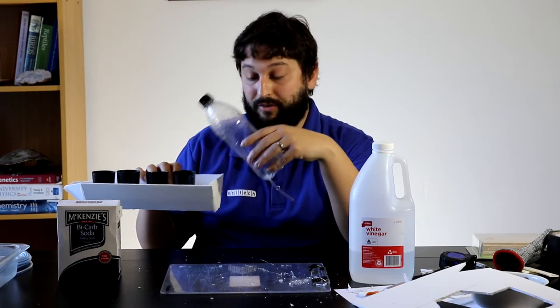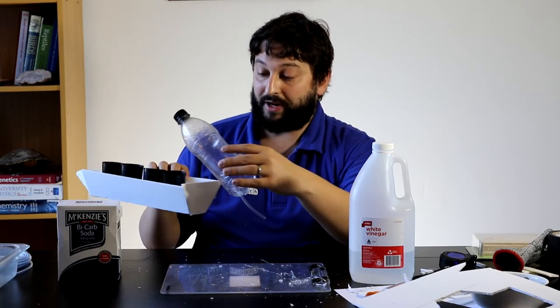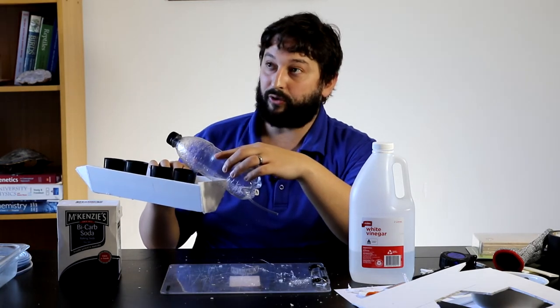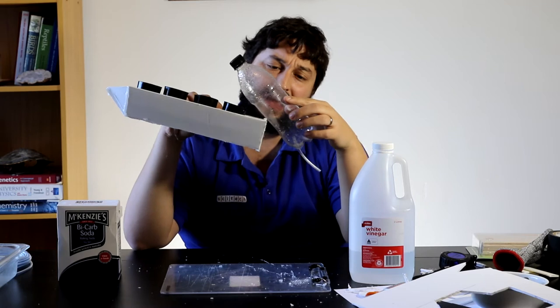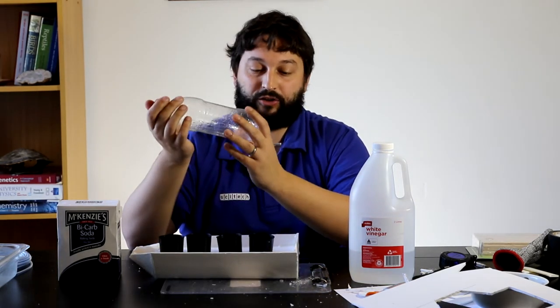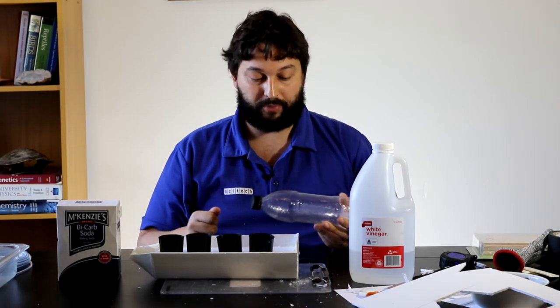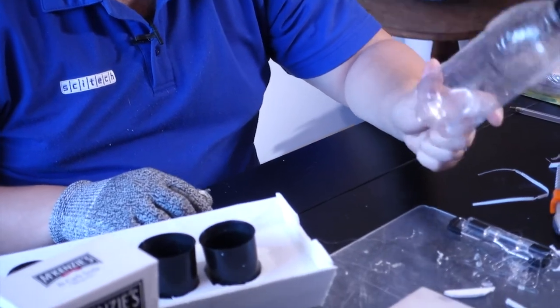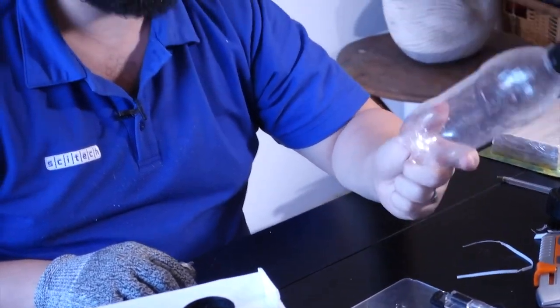There's two things I need to do to make that happen. Firstly, I need to find a way to actually attach the bottle to the boat without it falling off. And I also need to make sure that the vinegar and bicarb reaction is actually going to create enough force to power the boat. I'm going to test this with some bicarb and some vinegar in the bath. And we're going to make sure this actually works as an engine.